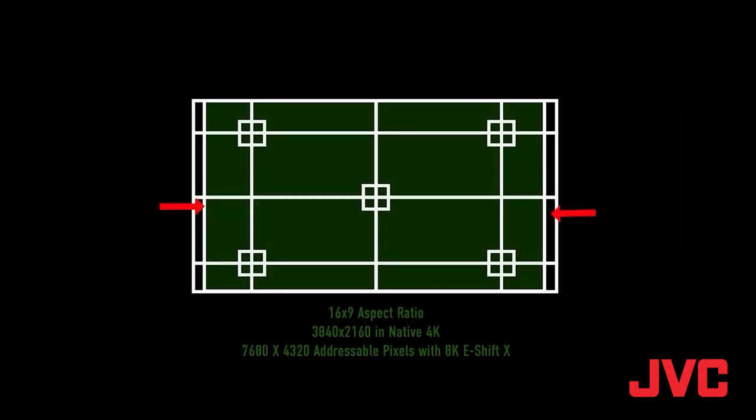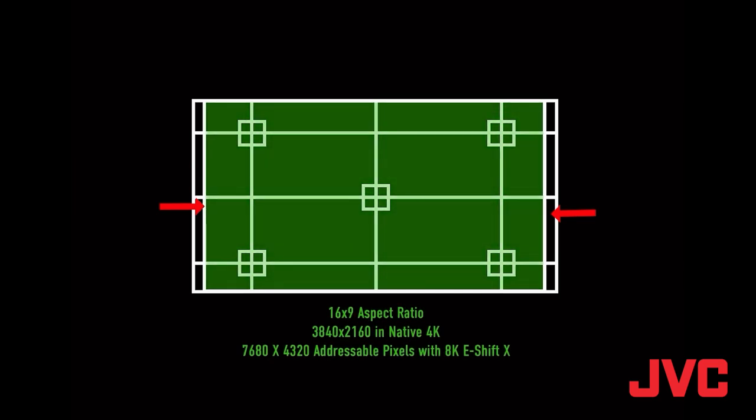So the first thing is most of the content that you're going to see out there is going to be 16x9. JVC allows you to line that up, but it's the inside lines on the JVC projector. All this area within the green is a 16x9 aspect ratio.